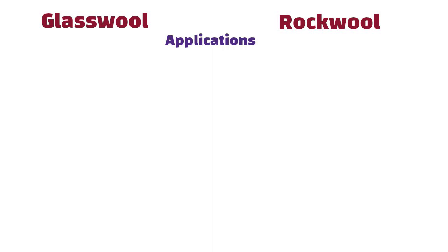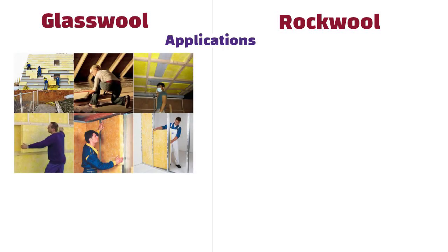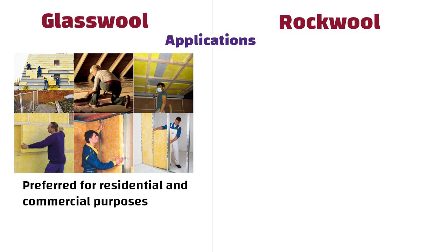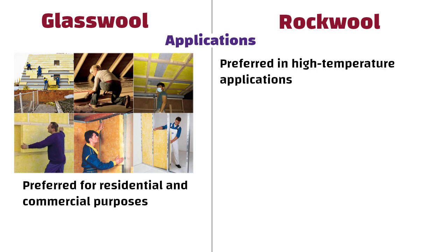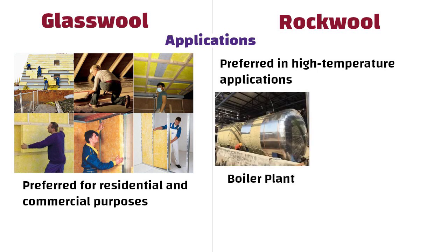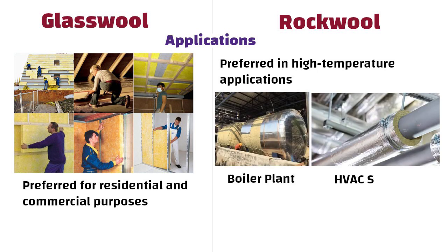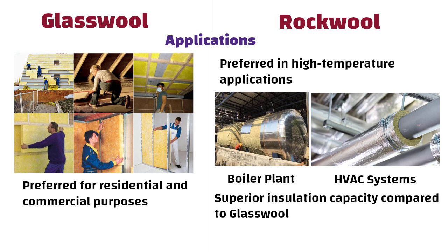Applications: Glass wool is more commonly preferred for residential and commercial purposes. On the other hand, rock wool is preferred in high temperature applications such as boiler plants and HVAC systems, due to its superior insulation capacity compared to glass wool.